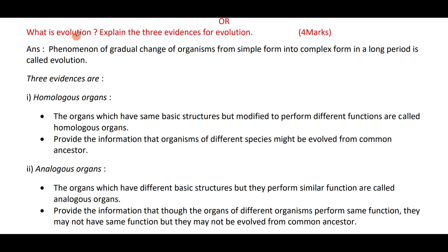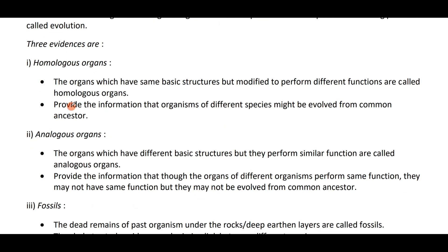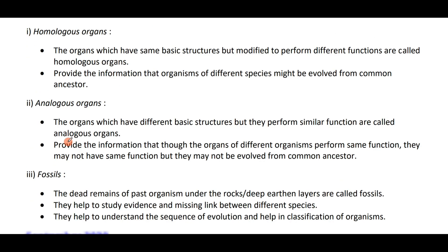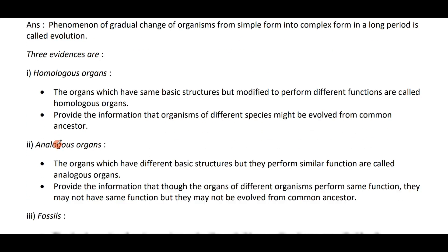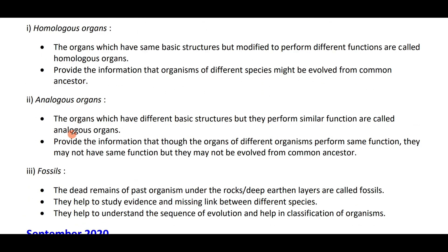What is evolution? Name three evidences for evolution. Evolution is the phenomenon of gradual change of organisms from a simple form into a complex form over a long period of time. Three evidences for evolution are: homologous organs, analogous organs, and fossils.